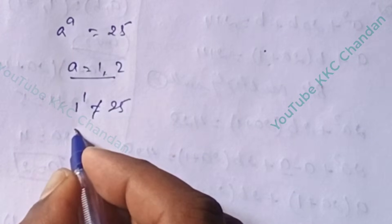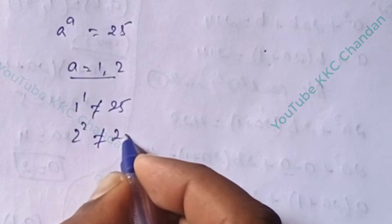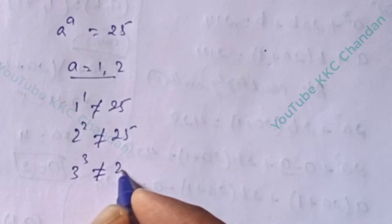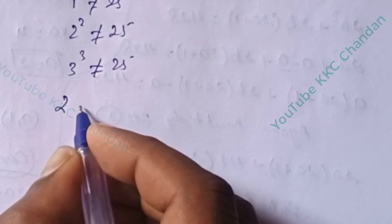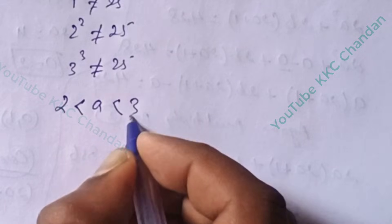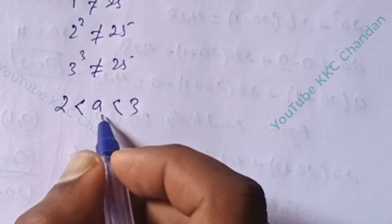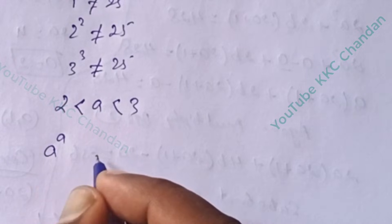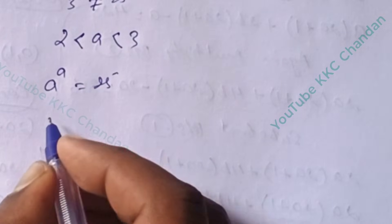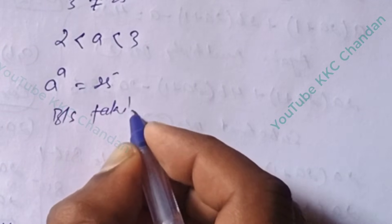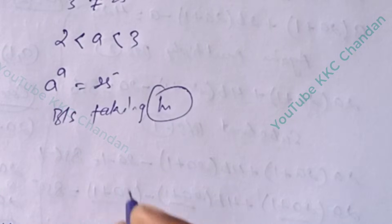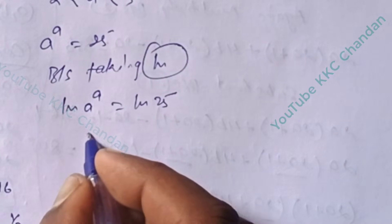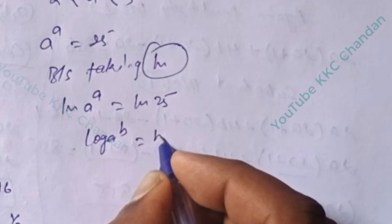If I put 2^2, that also does not equal 25. If I put 3^3, that also does not equal 25. So 2 < a < 3. Then, according to the question, a^a = 25. In the next step, taking ln on both sides: ln(a^a) = ln(25). We know that log(a^b) = b·log(a).